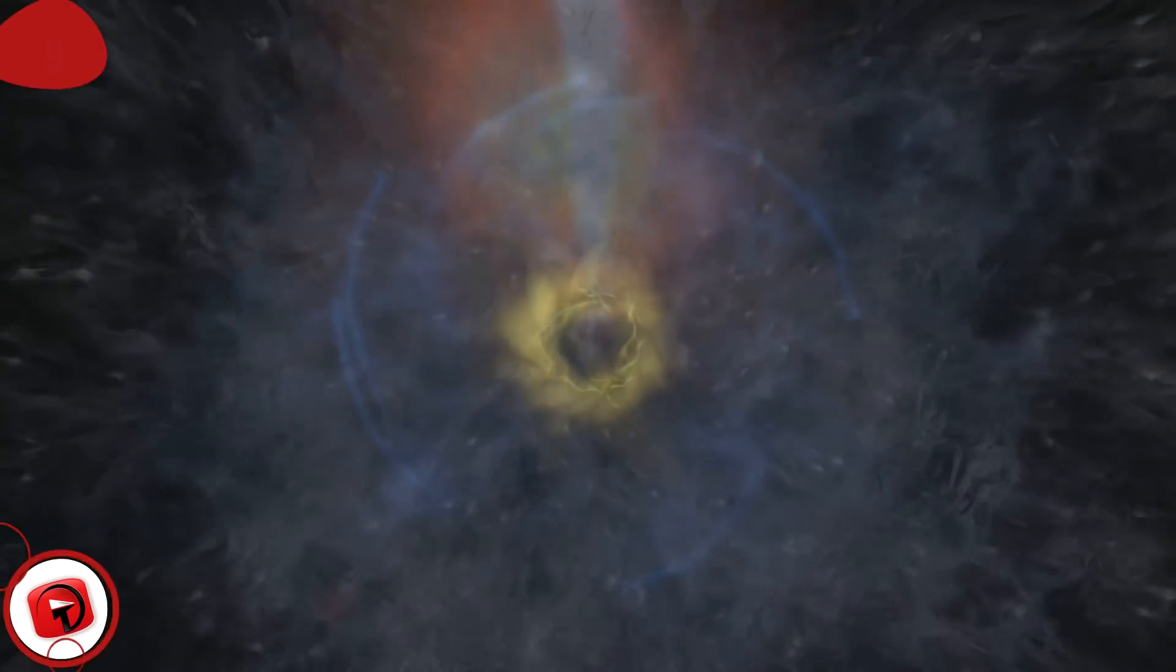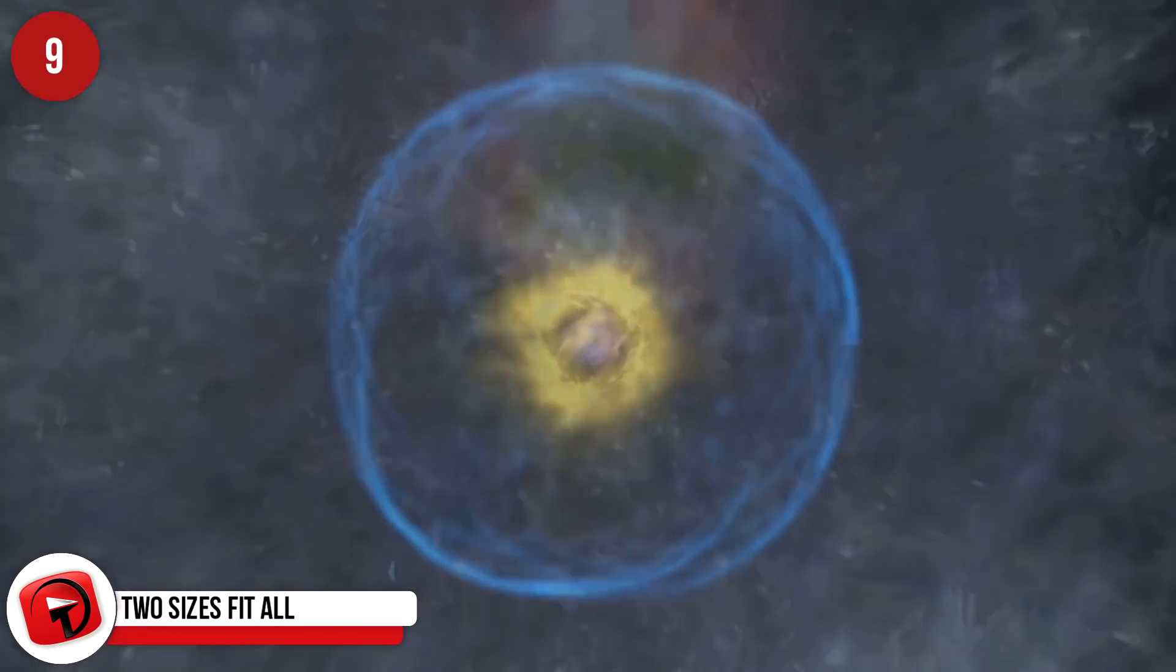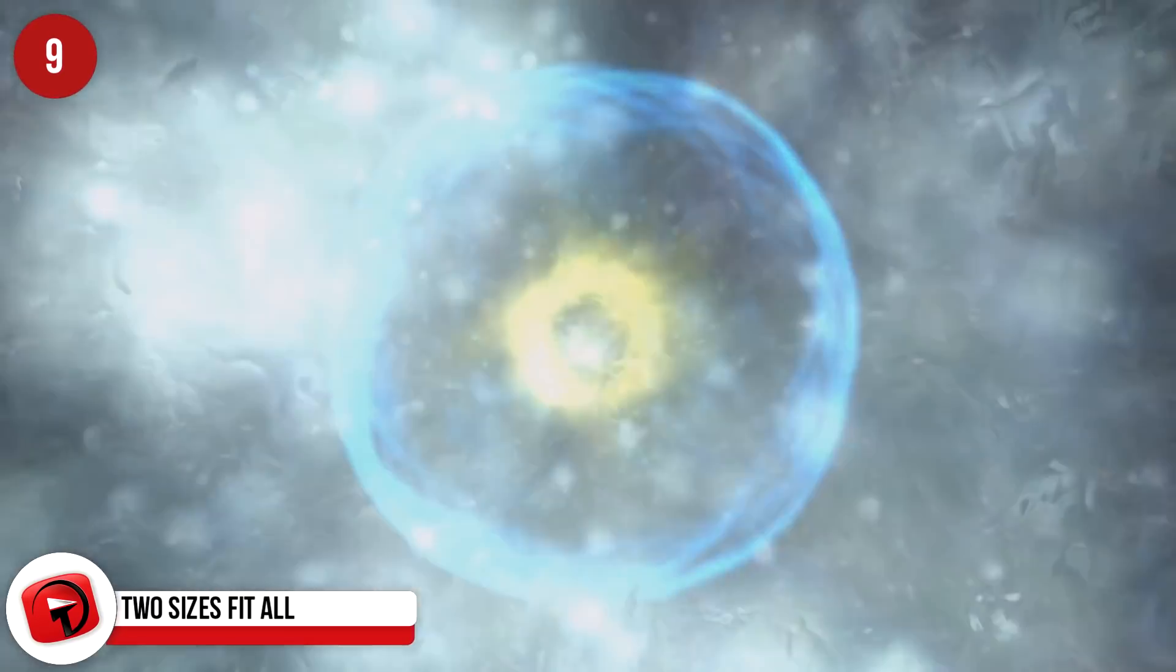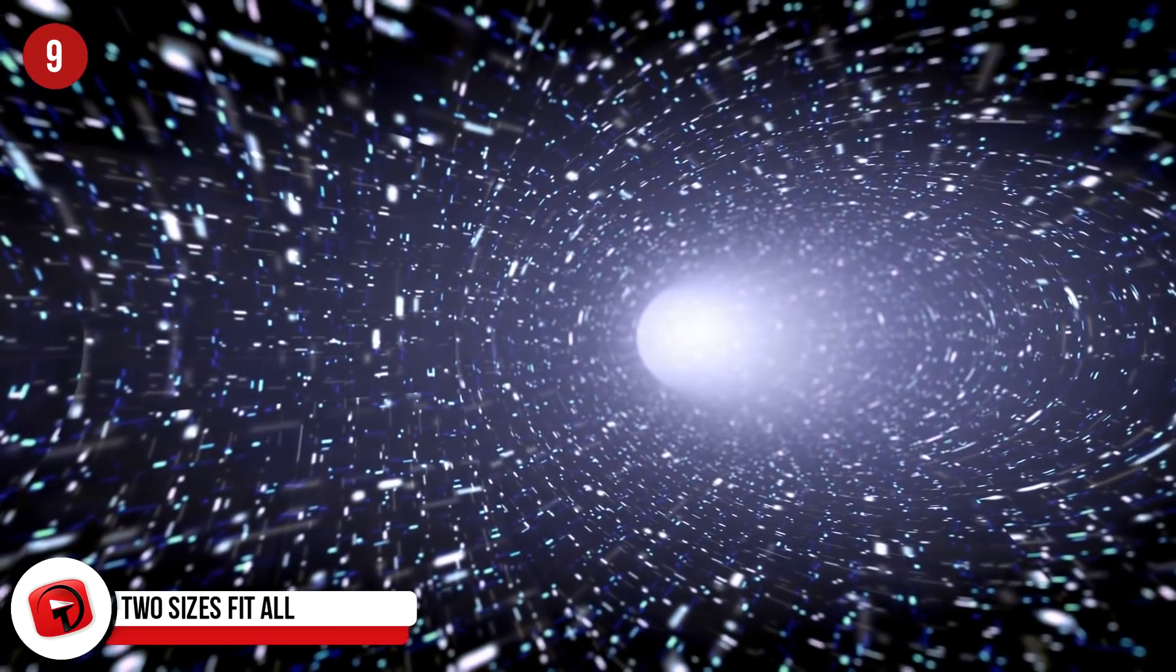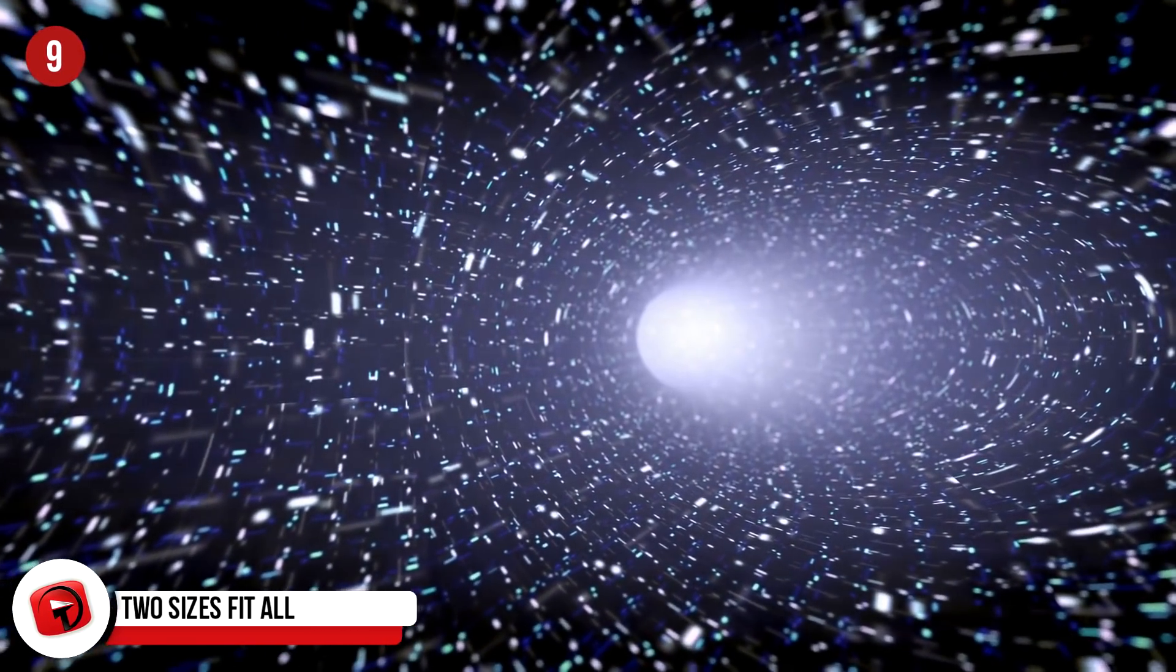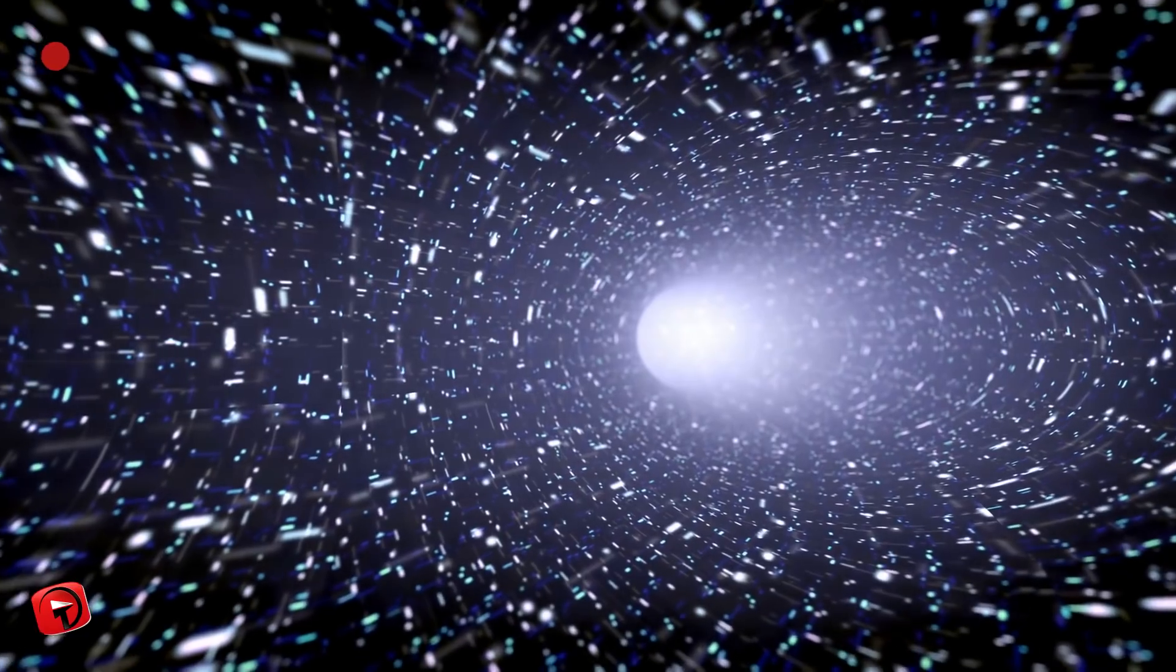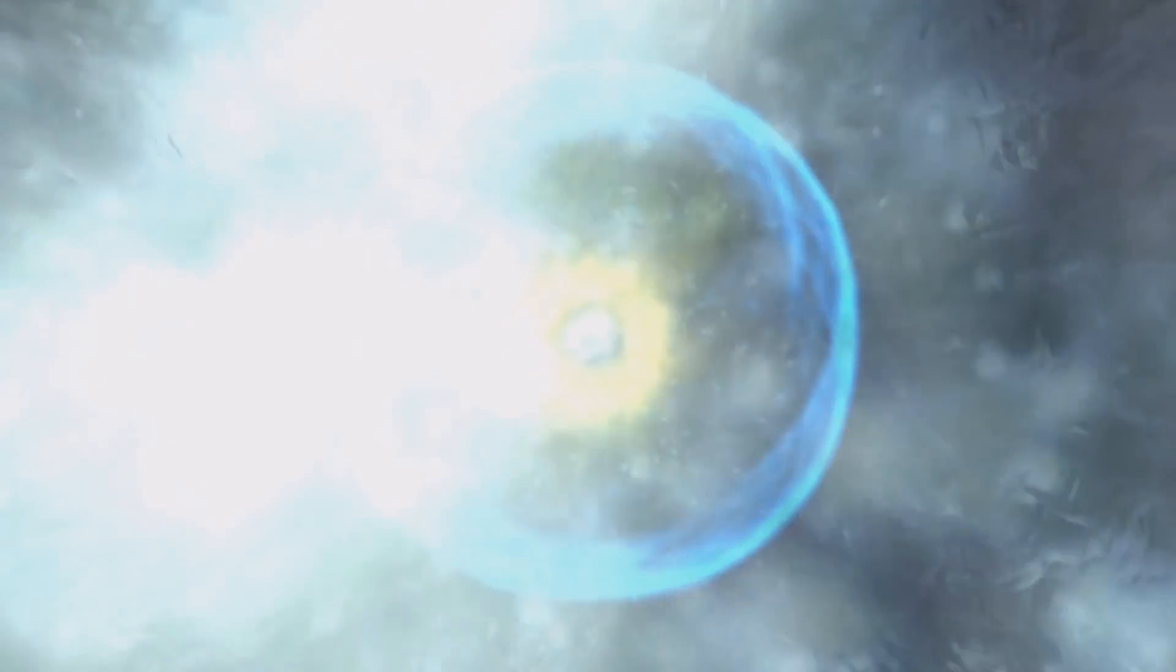Two sizes fit all. Black holes are classified based on their two basic sizes: big and really, really big. The not-quite-as-big type is a stellar black hole. These have masses 10 to 24 times that of our suns, contained within an infinitely small reality-bending point known as a singularity.